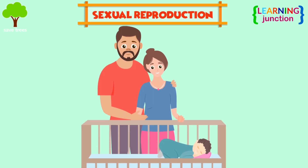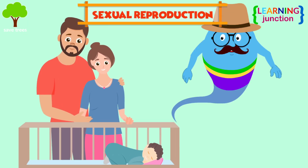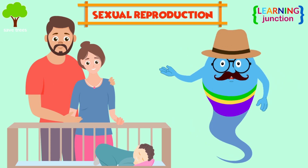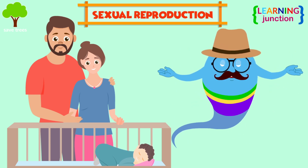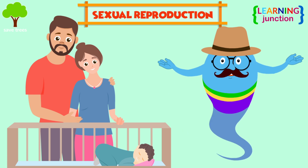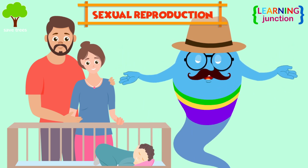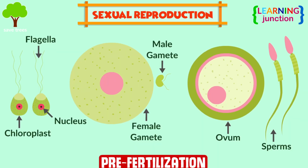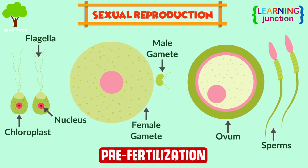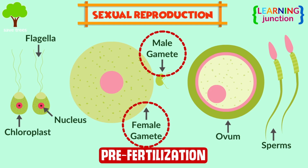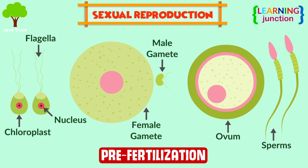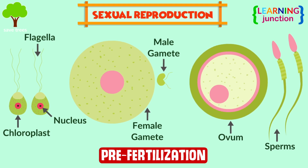Sexual reproduction is the production of new organisms by the uniting of genetic information of two individuals of different sexes. Let's have a look at the different stages. Pre-fertilization: this stage entails the events prior to fertilization. Gamete formation, or gametogenesis, and transfer of gamete are the two processes that take place during pre-fertilization.